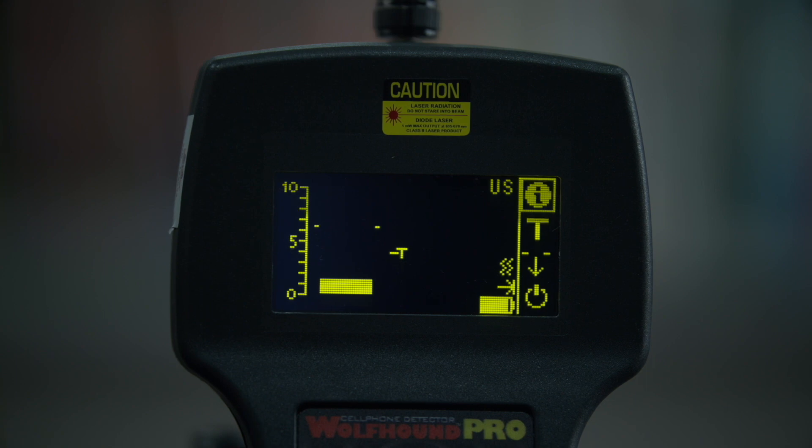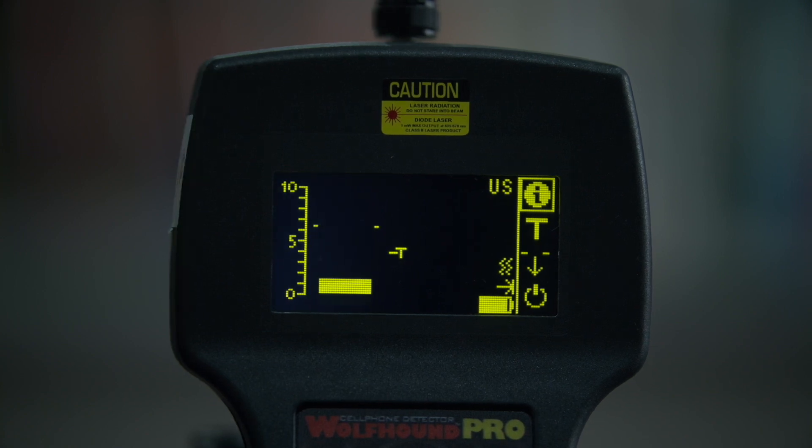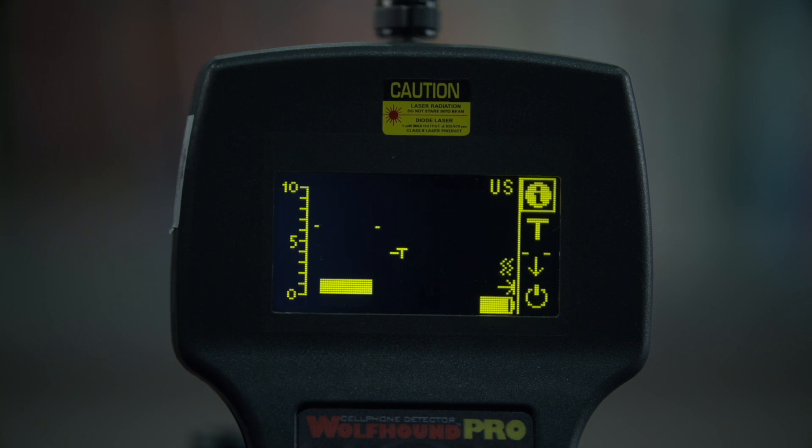If the prison has multiple levels, you will have to have your colleague go to each floor to determine the range of the Wolfhound Pro. If cell phones are permitted in administrative offices, visiting areas, or other non-secure areas within your facility, then you will have to take this into account as well.